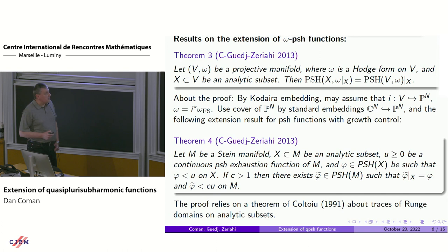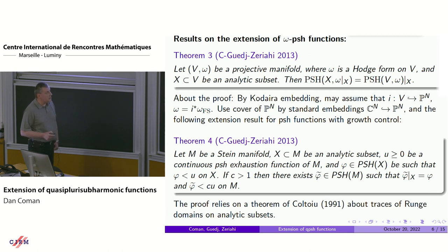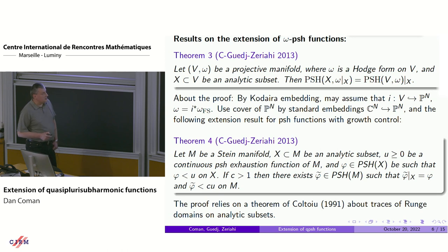I will say something about the proof in a more general case in a moment. But first, note that in such a situation you are in CP^N, because you can embed V in CP^N and a multiple of omega is the pullback of the Fubini-Study form. Then the idea is that you cover CP^N by standard affine charts, the standard embedding of C^N into CP^N, and one can use extension of plurisubharmonic functions on Stein manifolds. That is actually a corollary of the following theorem — you have a Stein manifold, an analytic subset, and the theorem is about extension with growth control. You are given a continuous plurisubharmonic exhaustion function U of M, and your function phi on the analytic subset is dominated by U.